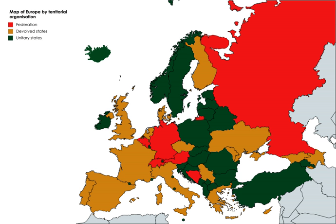Shortly after the 2011 Civil War in Libya, some people in Cyrenaica in the eastern region of the country began to call for the new regime to be federal, with the traditional three regions of Libya being the constituent units. A group calling itself the 'Cyrenaican Transitional Council' issued a declaration of autonomy on 6 March 2012. This move was rejected by the National Transitional Council in Tripoli.